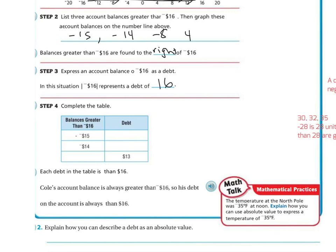Complete the table. The absolute value of negative 15 as a debt is going to be 15. The absolute value of negative 14 is going to be 14. If the debt is 13, then it was negative 13. Each debt in the table is blank than 13. So the answer to that is less than 16. Cole's account balance is always greater than negative 16, so his debt on the account is always less than 16.